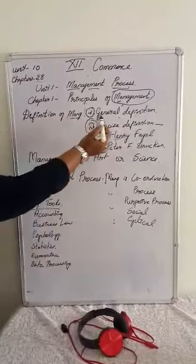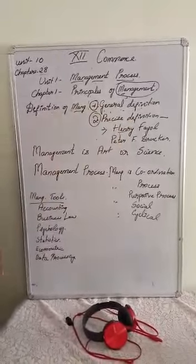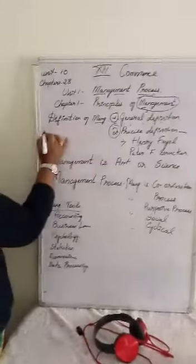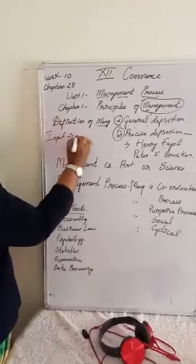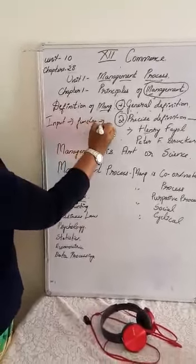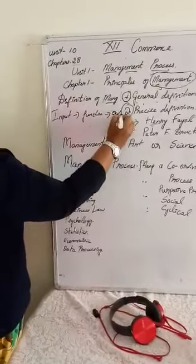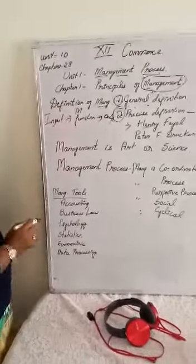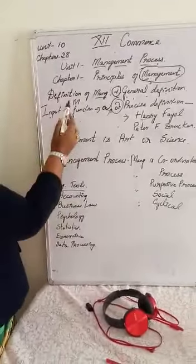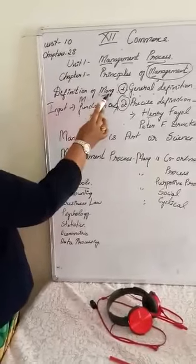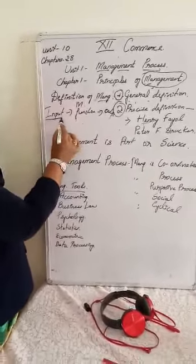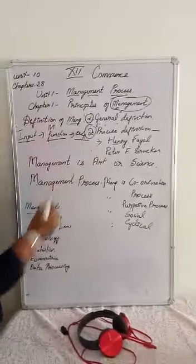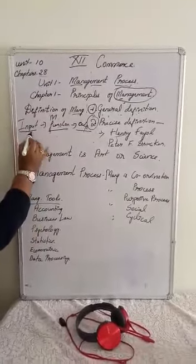Now we will move on to the first definition, that is the general definition. In the general definition, remember only three words: input, managerial function, and output. The definition states that management means the allocation of inputs by using managerial functions to get the desired output.